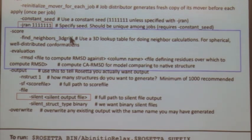These are just some scoring information. So, -score:find_neighbors_3dgrid. Just sets up a 3D grid around your residue and finds all the neighbors in that area. It's just a much faster way of setting up for scoring. And then you can also tell it to compute RMSDs. Let's say you're only interested in the RMSD of your model to the core part of the protein.